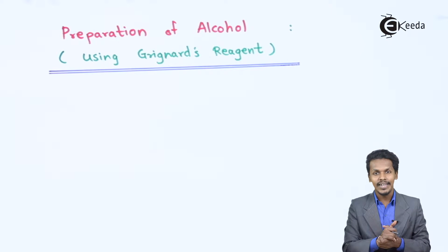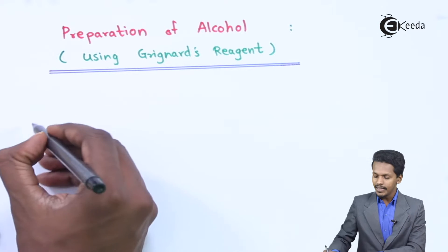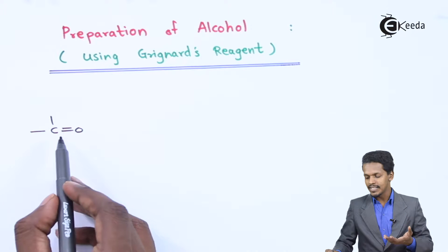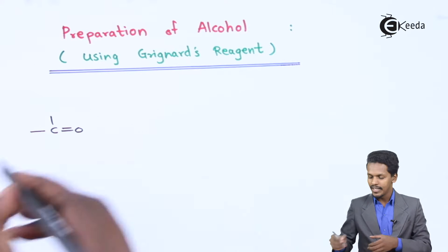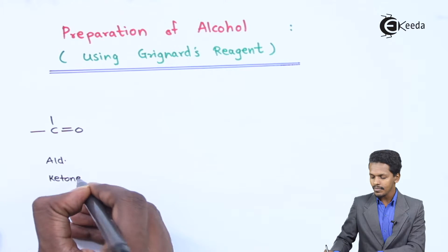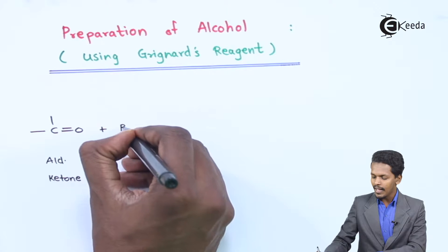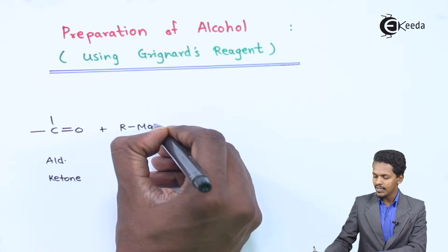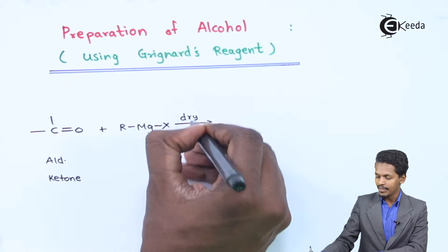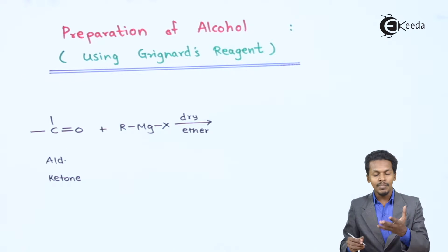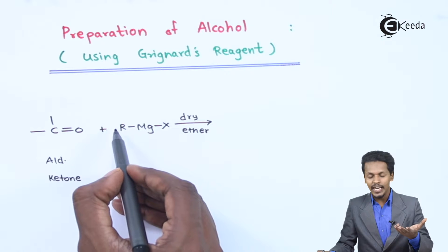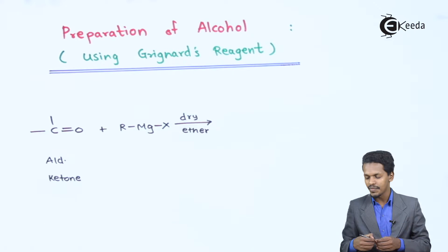Let me give you the general reaction. If we have an aldehyde or ketone, it consists of a carbonyl group, that is C=O. Suppose this reacts with RMgX, also known as Grignard reagent, and this reaction occurs in the presence of dry ether. The R or alkyl group has a partial negative charge, and the MgX has a partial positive charge.